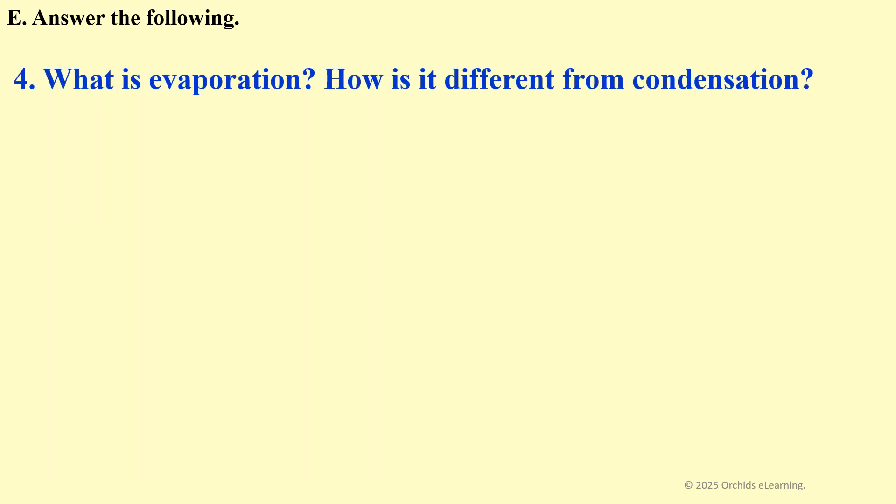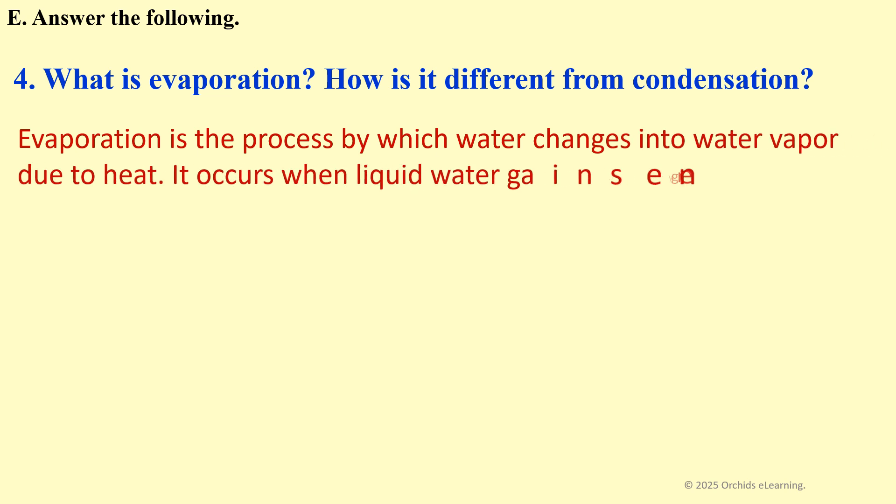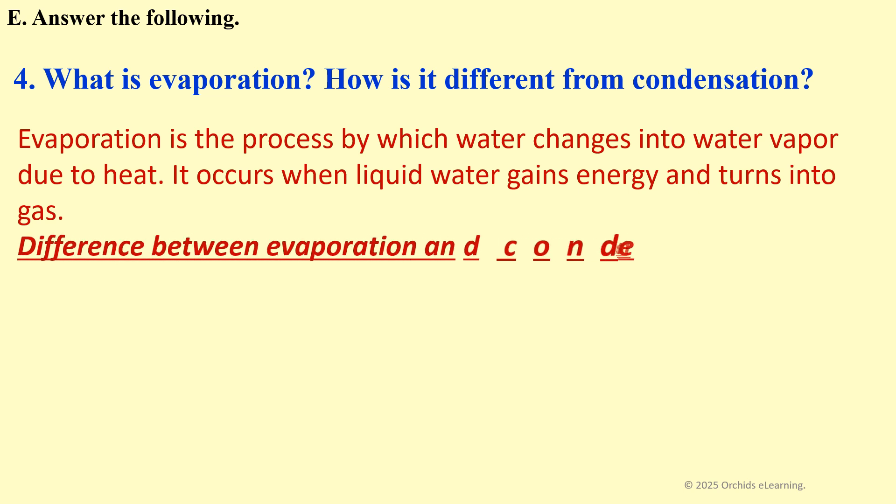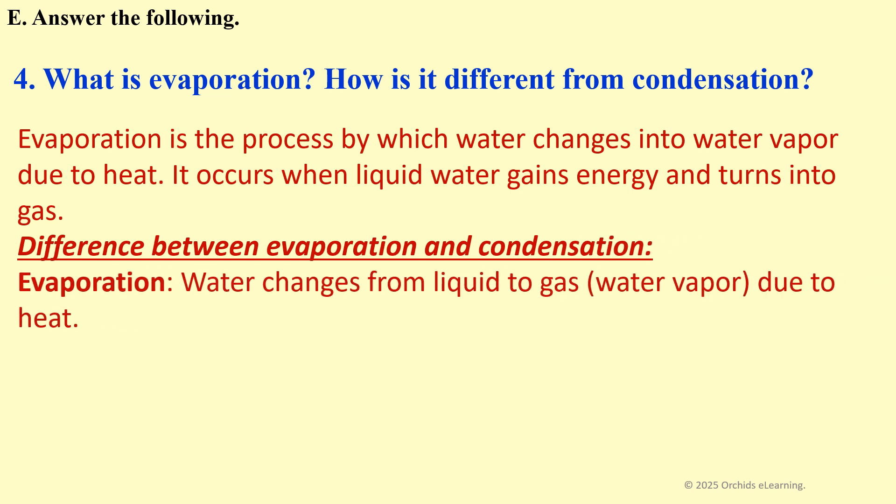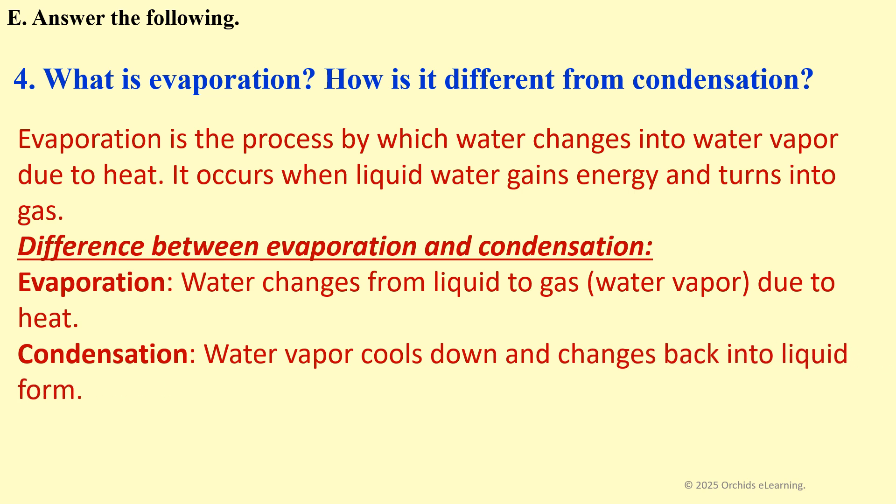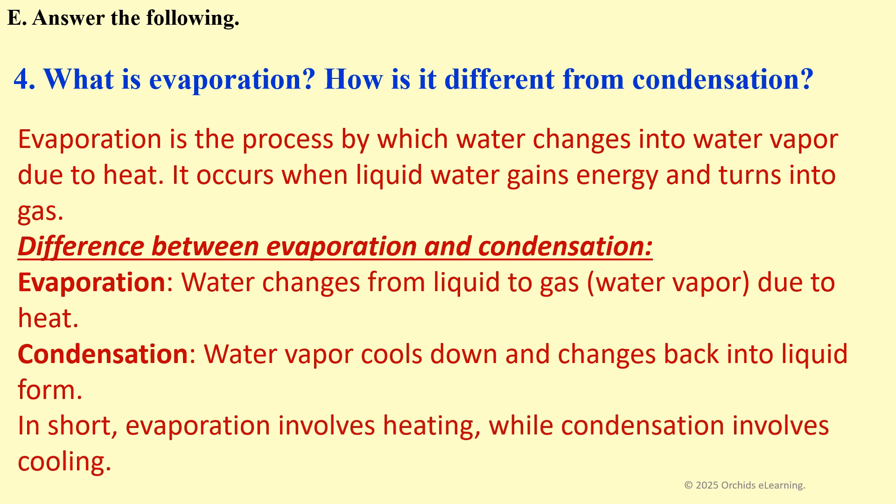What is evaporation? How is it different from condensation? Evaporation is the process by which water changes into water vapor due to heat. It occurs when liquid water gains energy and turns into gas. Difference between evaporation and condensation: Evaporation - Water changes from liquid to gas, water vapor, due to heat. Condensation - Water vapor cools down and changes back into liquid form. In short, evaporation involves heating, while condensation involves cooling.